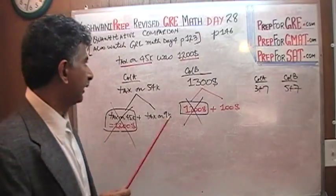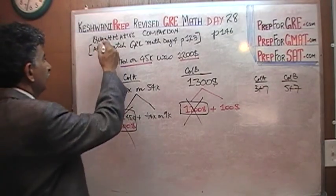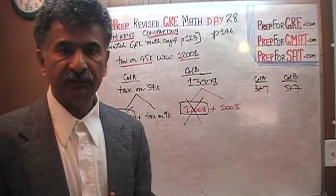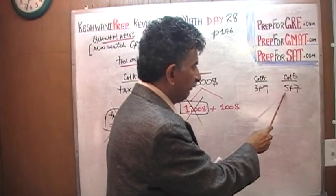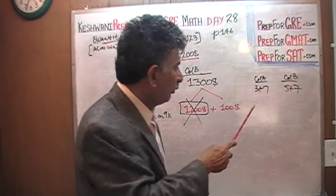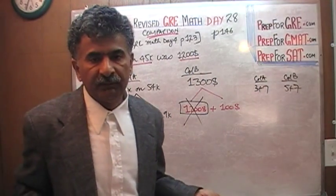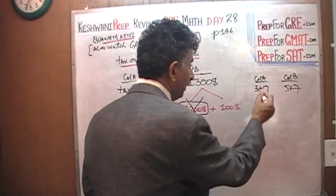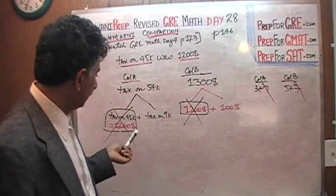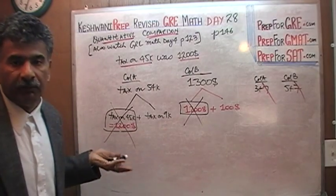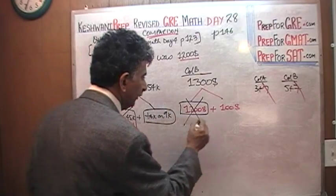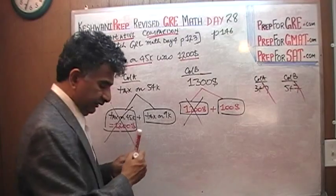These questions are about quantitative comparison, not computation. Nobody is asking you to compute anything. Because 7 appears in both columns, you can just subtract 7 — therefore 5 is more than 3. Basically what we are being asked here is to compare the tax on $9,000 versus $100. That's what we are asked. This part disappears — we are asked to compare just these two quantities.